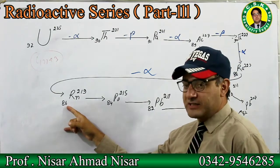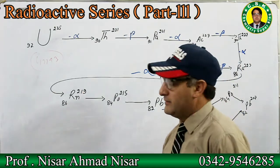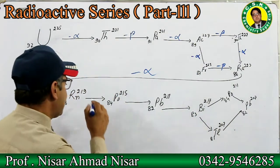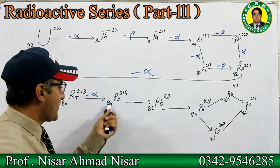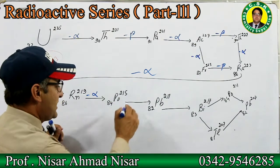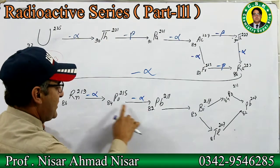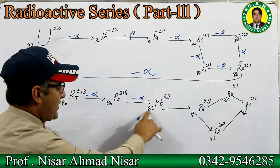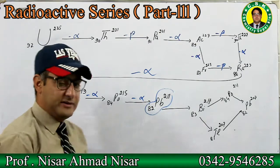Radium has atomic number 88 and mass number 223. From this radium, an alpha particle is emitted — atomic number decreases by 2 to give polonium-84, mass number decreases by 4 to give 215 — that is polonium-84-215. Again an alpha particle is emitted: atomic number decreases by 2 to give 82 and mass number decreases by 4 to give 211 — that is lead-82-211.